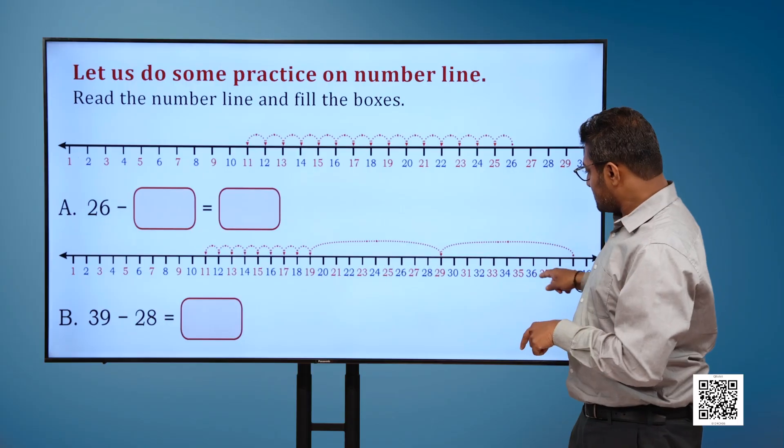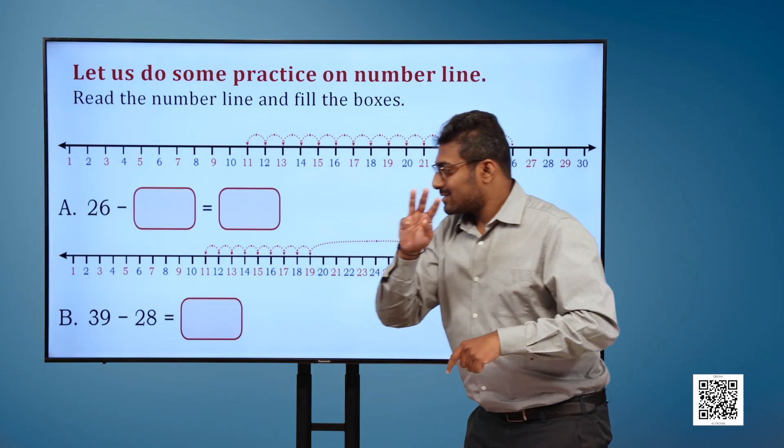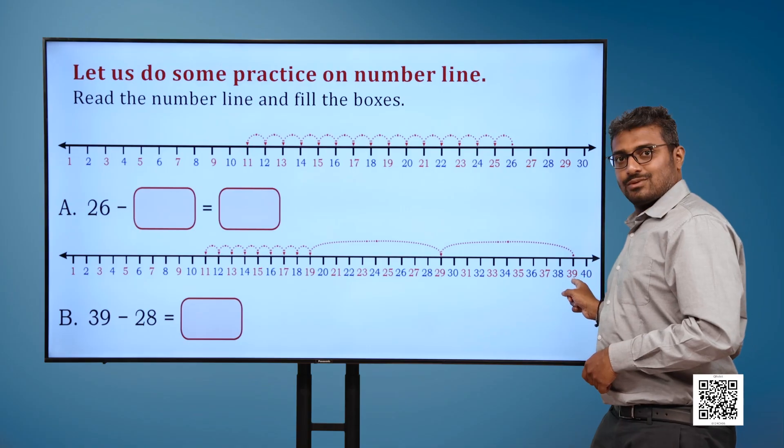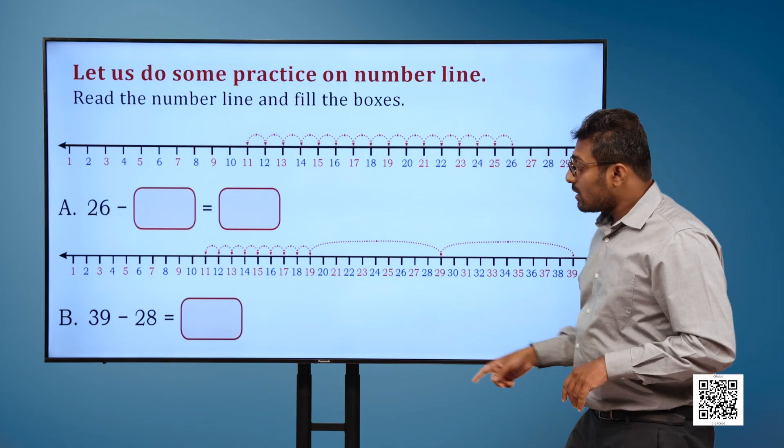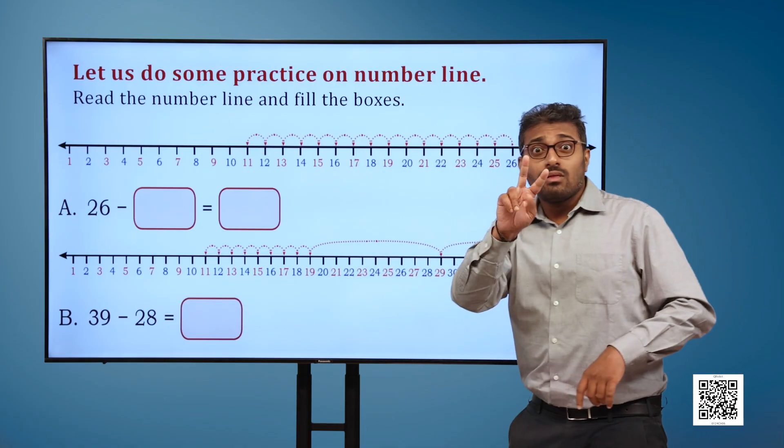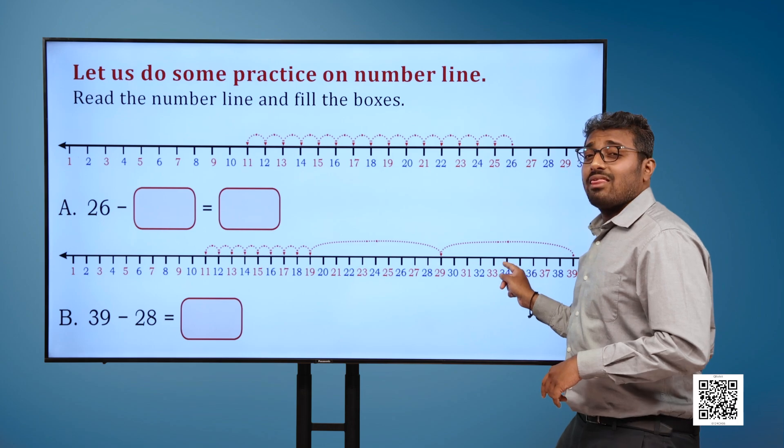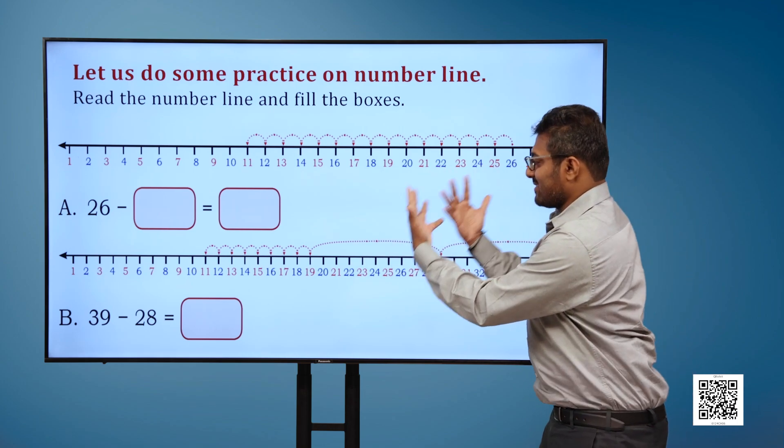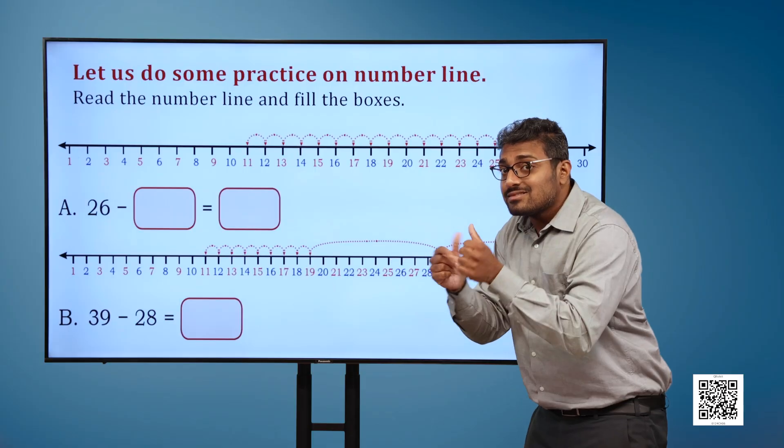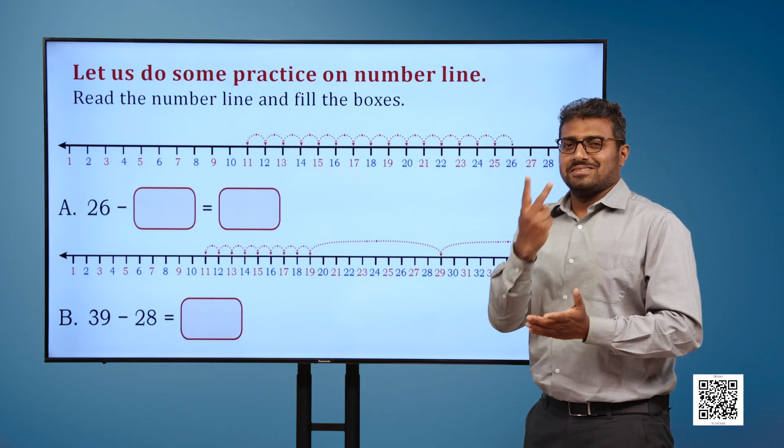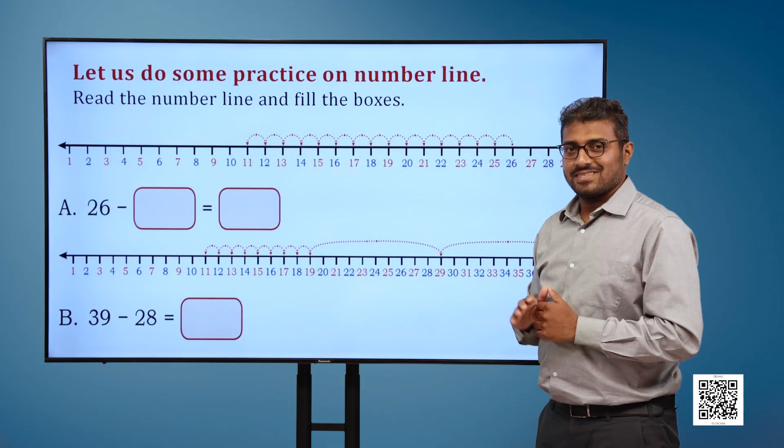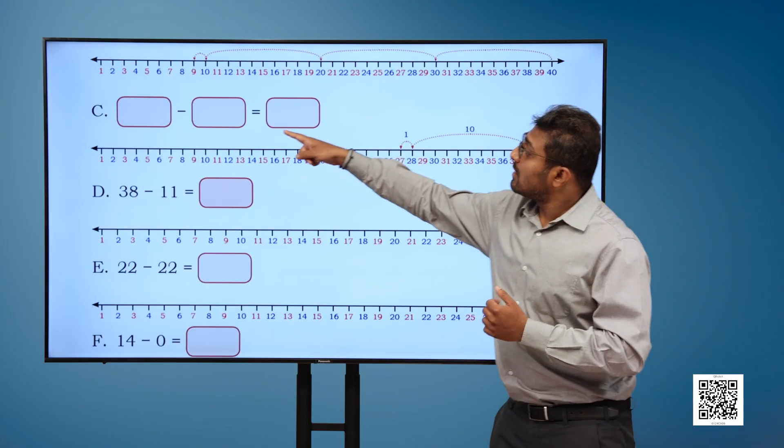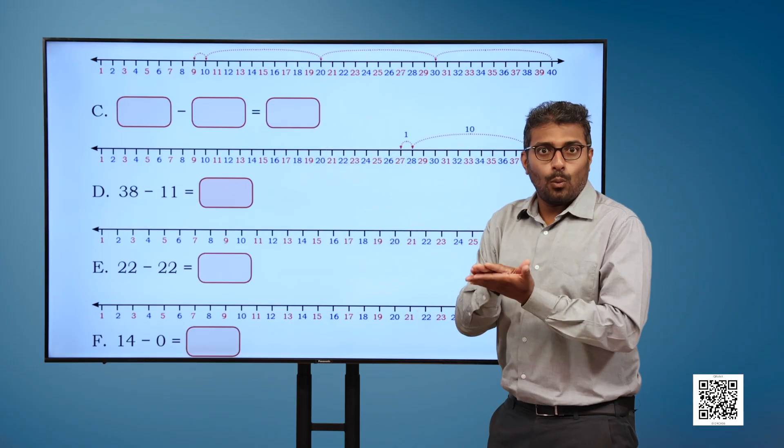We have another number line. From 39, we will go 10 steps backward to reach at a certain number. From there, we will go 10 steps backwards again. We will arrive at a particular number. From that number, we will go 8 ones backwards. See, blank minus blank is equal to blank.